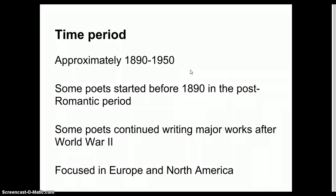Virginia Woolf, one of the modernist authors I'm going to talk about in this set of notes, she said that it happened on or about December 10, 1910, that the human race completely changed due to all of the stress of all this innovation. Now some poets did start before 1890 as post-Romantic poets, and William B. Yeats was one of those. We may or may not study him this year, and so they're still considered modernist poets even though they were writing before 1890.